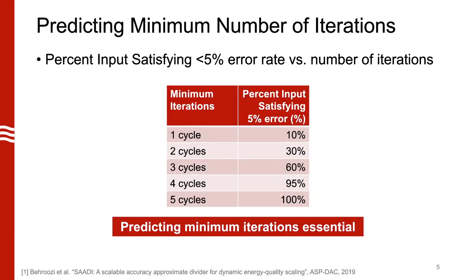Something we could also look at is the minimum number of iterations to satisfy some target. There's a large variation in error. If our application wants a 5% error rate, and we run our circuit for three cycles, on average it might satisfy that target. But for 30% of our inputs, we're running additional iterations than we actually need to, consuming extra energy. Similarly, 40% of our inputs aren't even satisfying the target. If we can predict the minimum number of iterations, we can provide finer-grain quality control and better guarantees to the user.